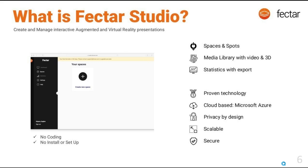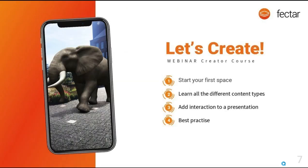That's the introduction to Factor. If you want to read more, just go to the website. We're here today to create something — it's the Creator Course webinar. I'm going to switch the screen, log on to Factor Studio, set up a space, and place a 3D object. If you have your smartphone ready, you can use the QR code in the Factor app to view the actual space I'm creating in real time. Let me switch my screen now.